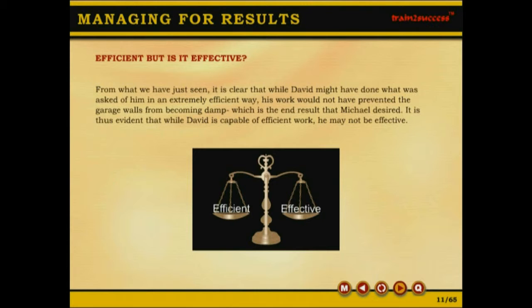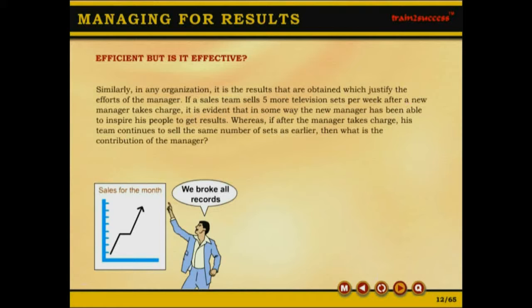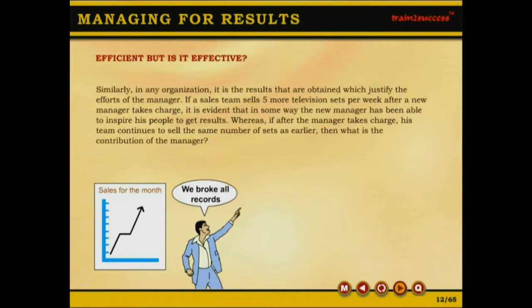From what we have just seen, it is clear that while David might have done what was asked of him in an extremely efficient way, his work would not have prevented the garage walls from becoming damp, which is the end result that Michael desired. It is thus evident that while David is capable of efficient work, he may not be effective. Similarly, in any organization, it is the results obtained that would justify the efforts of the manager. If a sales team sells five more television sets per week after a new manager takes charge, it is evident that the new manager has been able to inspire his people to get results. Whereas, if after the manager takes charge his team continues to sell the same number of sets as earlier, then what is the contribution of the manager?